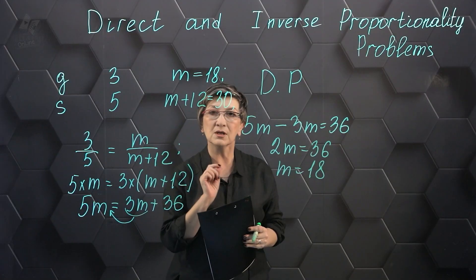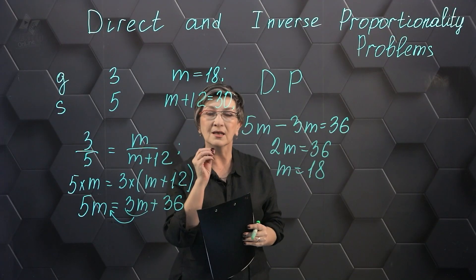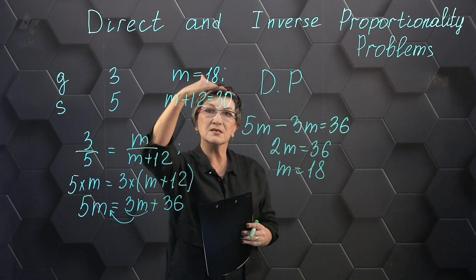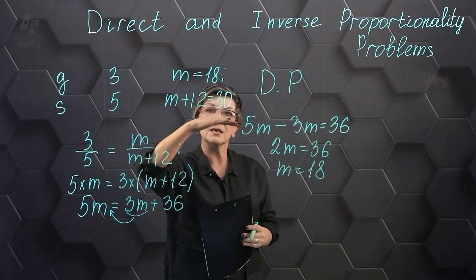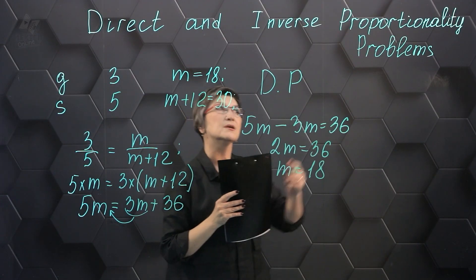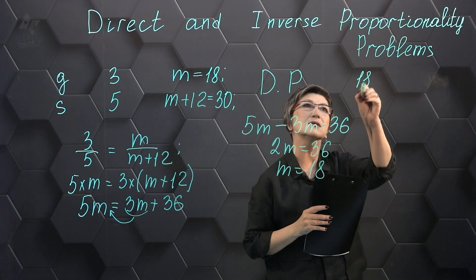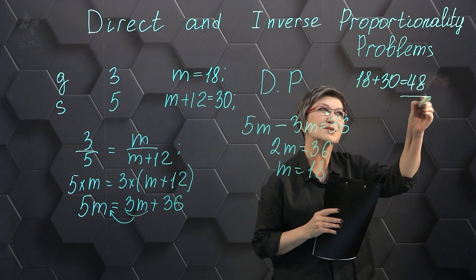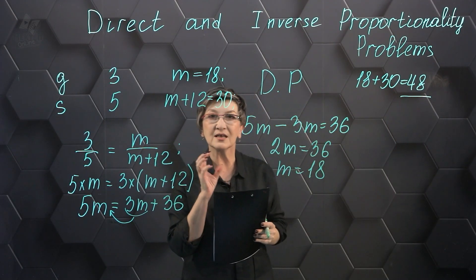But we have another question. We need to find the total weight of the alloy. But if there's 18 grams of gold and 30 grams of silver, the total weight of 18 plus 30 equals 48.